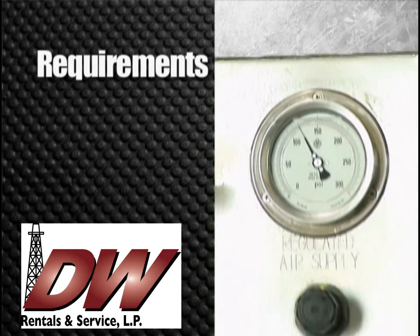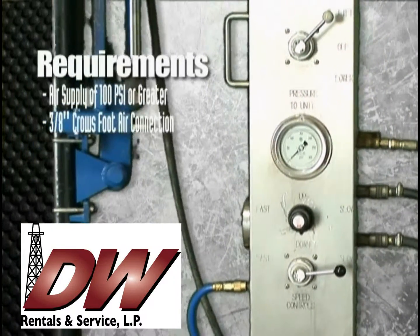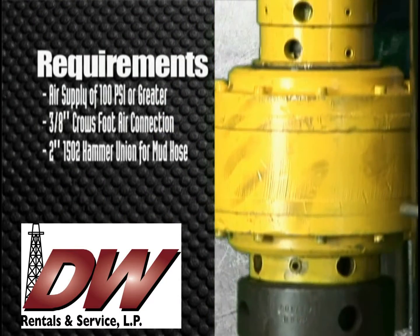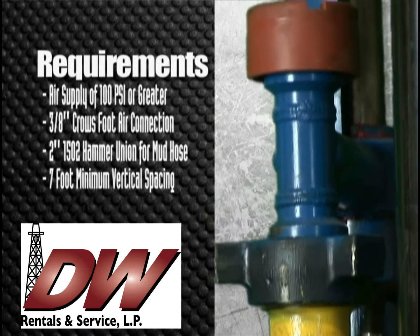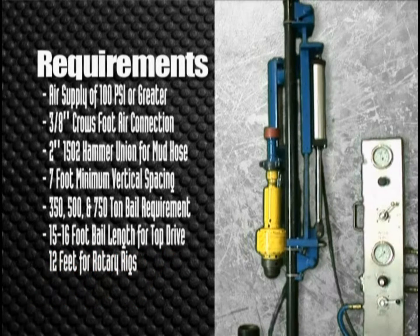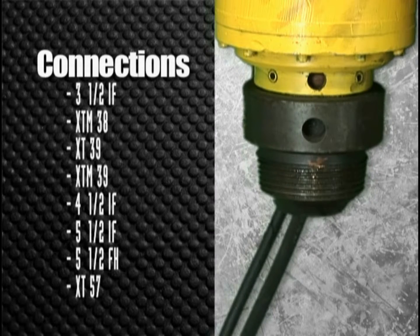Rig requirements for the DPC tool include an air supply at 100 PSI, an air connection of 3/8 inch crow's foot, and a 2-inch 1502 hammer union. The DPC tool has a minimum vertical space requirement of only 7 feet and variable bale requirements of 350, 500, or 750 tons. A bale length of 15 to 16 feet is required for top drive rigs and only 12 feet for rotary rigs. The following connections are currently in inventory, with any new connections requiring approximately one week's time to provide.